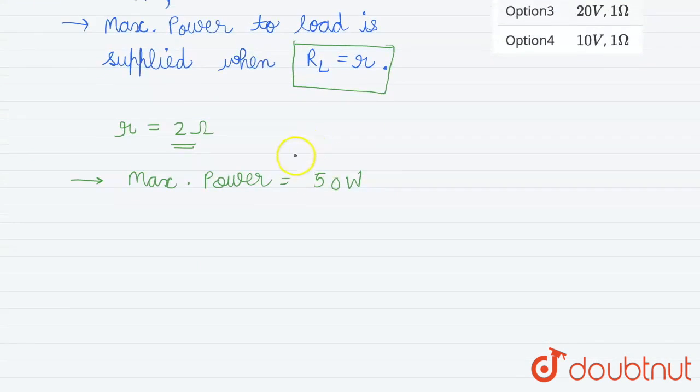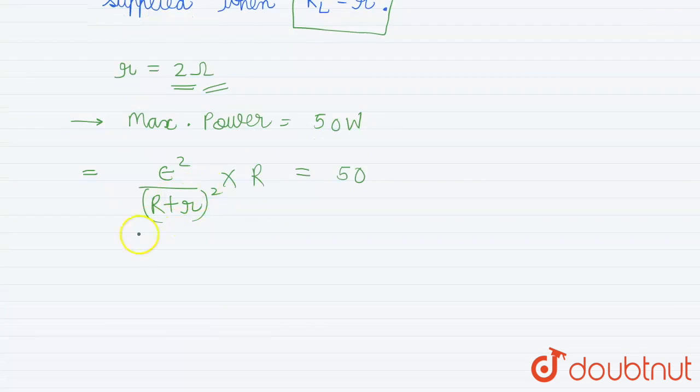So by this we can get our max power as e squared upon (r plus R) whole squared into R equals 50. Now we calculated our load resistance and internal resistance which is 2 ohms. So putting this value, epsilon squared upon 4 squared into 2 equals 50.